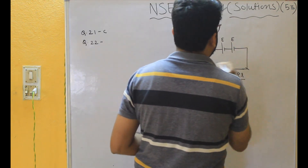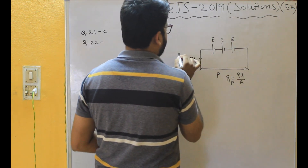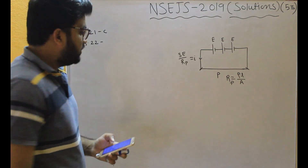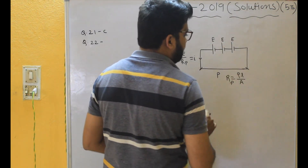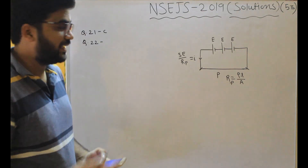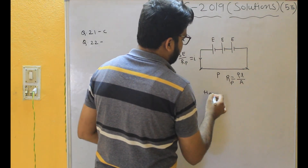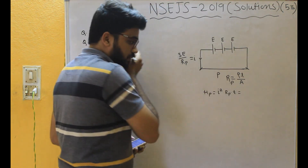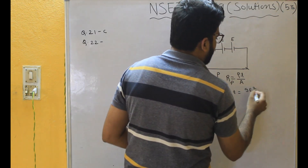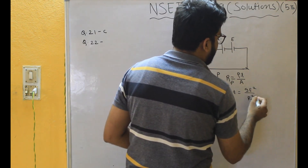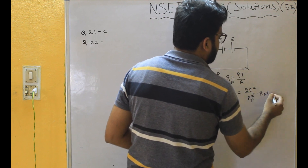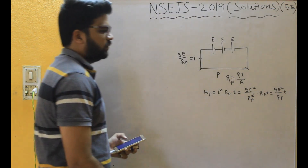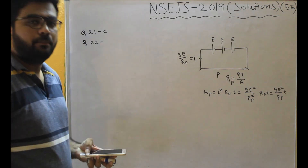From this, current I is equal to 3E divided by the resistance of P. Heat generated in this wire will be I²RT. Heat generated in wire P will be I²·R_P·T, which equals (9E²/R_P²)·R_P·T. The R_P terms cancel, giving heat H_P = 9E²/R_P · T.